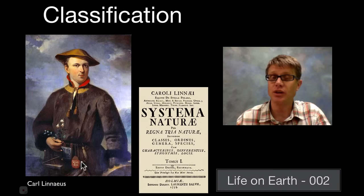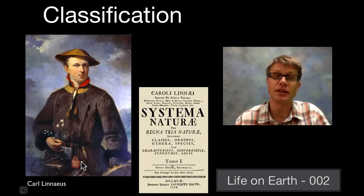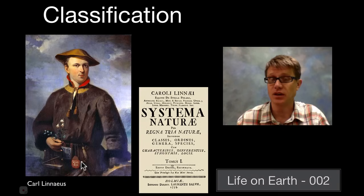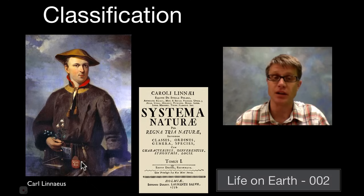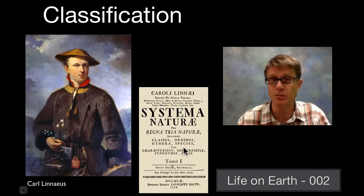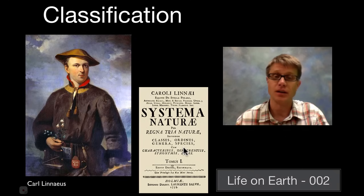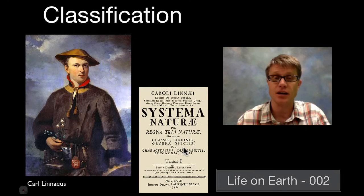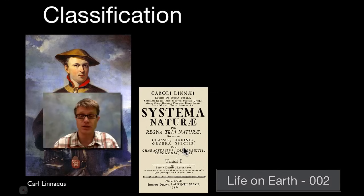Carl was a Swedish botanist. Basically what he liked to do is discover new species, name them, classify them. And so if you're familiar with order and class and species, this all comes from Linnaeus. We call this our Linnaean classification system.